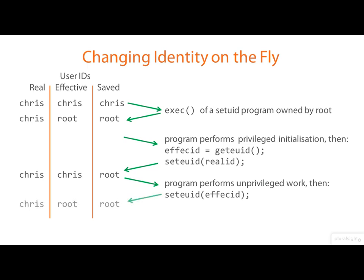The program continues to perform unprivileged work, then potentially it can switch its effective user ID back to being root in order to perform some privileged cleanup operations. Now there is another form of identity called the filesystem user ID, which is used for testing file access permissions. It's normally the same as the effective user ID, and its use is sufficiently obscure to not cover in a course at this level.